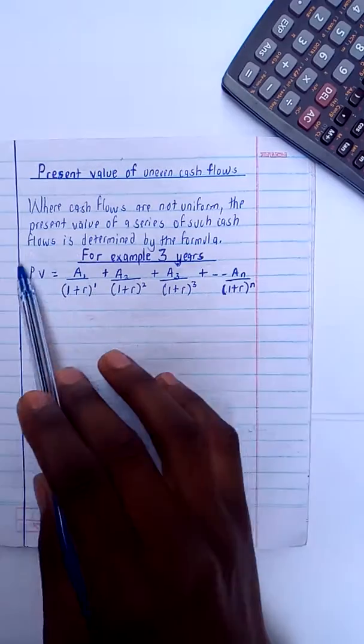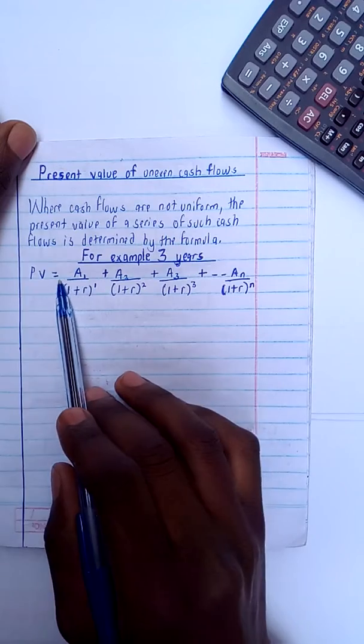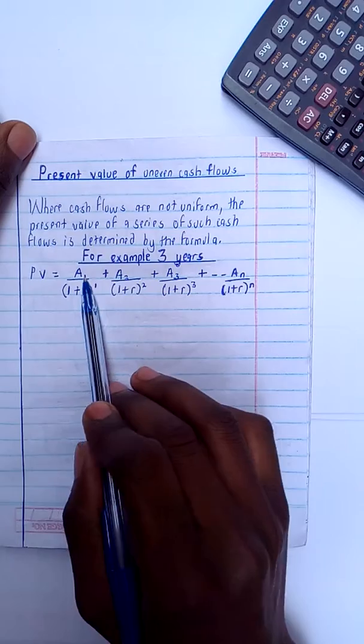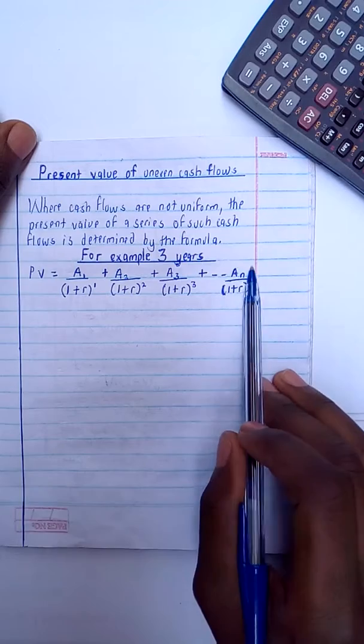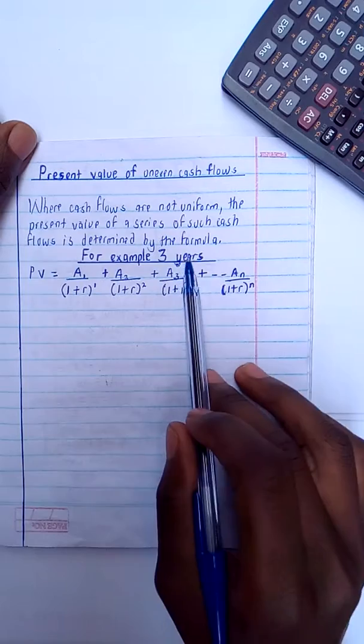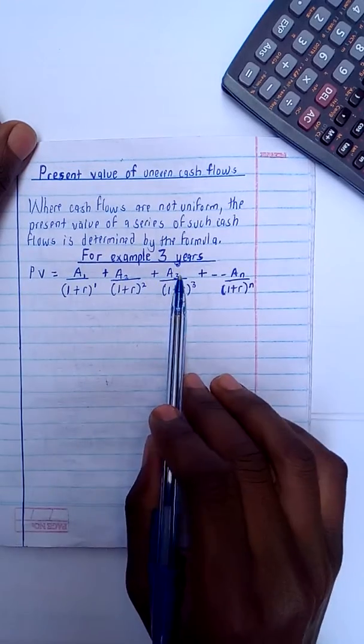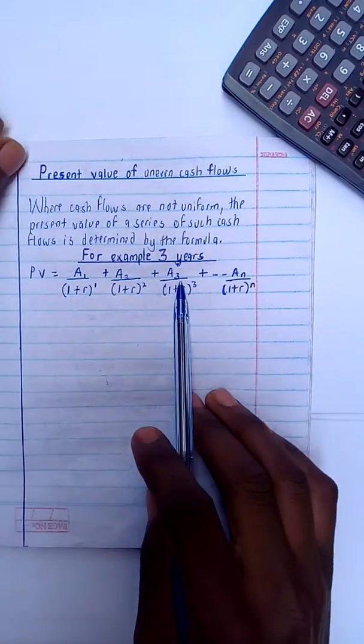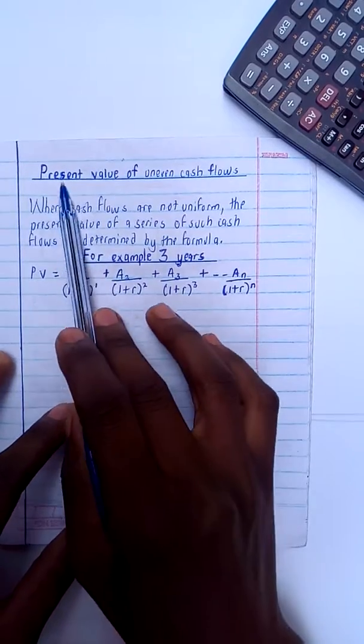If I want to determine the present value of uneven cash flows, the present value is equal to the annual installment divided by bracket one plus r bracket to the power one of that one year, same to the second year, same to the third year. I continue till, depending on the number of years being given. But in this case, I've been given three years, so I'll end at three years. And after summing this, I'll be getting my present value of the uneven cash flows.